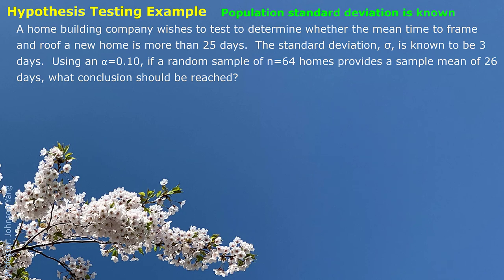Here is another example. A home building company wishes to test whether the mean time to frame and roof a new home is more than 25 days. We assume the population standard deviation is 3 days. Using a 10% significance level and a random sample of size 64 homes, we find an average time of 26 days. The null hypothesis is 25 days and the alternative hypothesis is greater than 25 days — this is a one-tailed test.